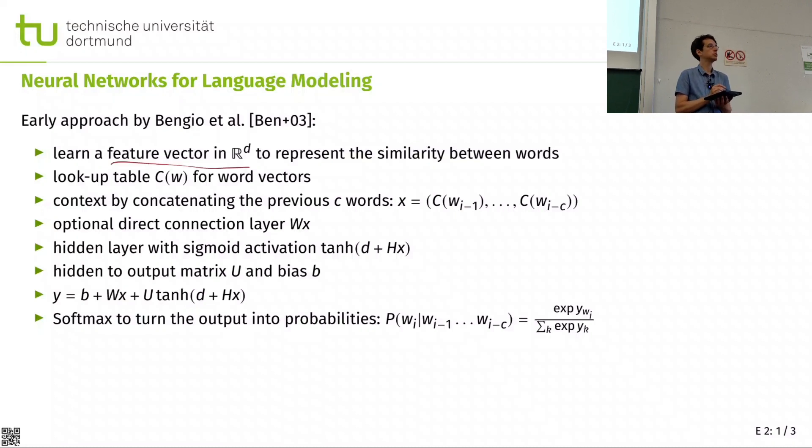We want to learn a feature vector in some vector space R to the power of d that represents word similarity. And for this, we need a lookup table that maps words to those vectors. And then we can get the context by concatenating the neighbor words. In this case, it's preceding words, so one-sided context. Later on, we'd often use two-sided contexts. And that's kind of what in the feature functions we have been also looking at previous and next words.